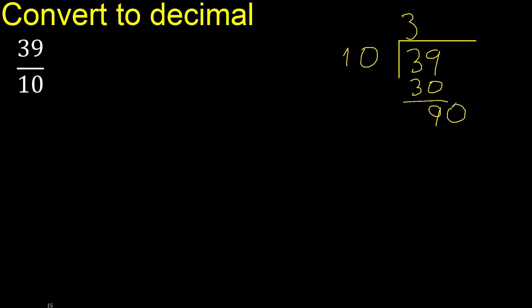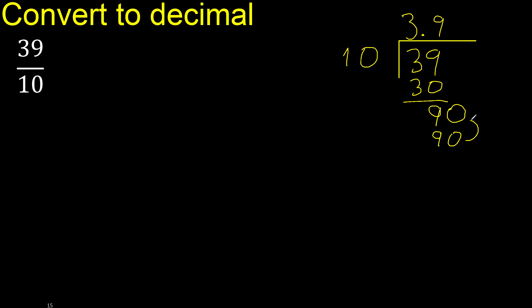Place the decimal point — only once. Then multiply: by which number? Multiply by 9 is 90, which is not greater.